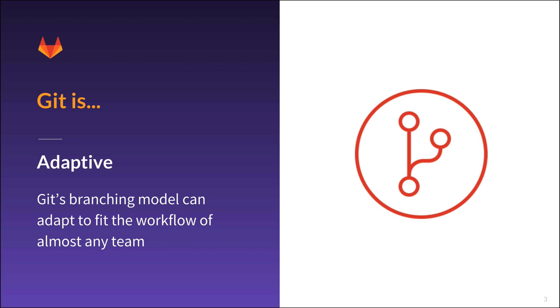Git is also adaptive. The modern development or knowledge worker's environment is fast-paced. The ability to keep up with competition, regulation, or innovation is fast becoming the way modern enterprises can differentiate themselves.